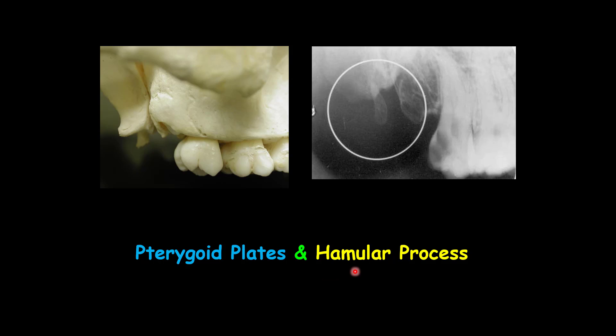The pterygoid plates and the hamular process. The medial and lateral pterygoid plates of the sphenoid bone are immediately posterior to the maxillary bone. We don't always see these two plates on the intraoral radiograph of the third molars, but sometimes they are apparent as a single radiopaque shadow. The hamular process extends inferiorly from the medial pterygoid plate and is the attachment site for the medial pterygoid muscle. You can see the hamular process in practical imaging of the maxillary molars, especially the third molar.